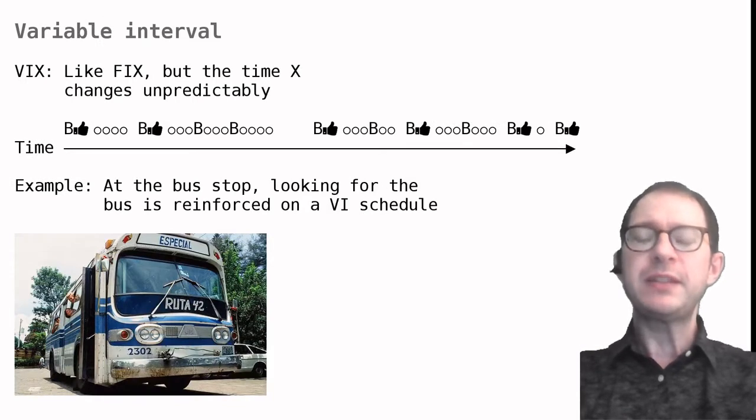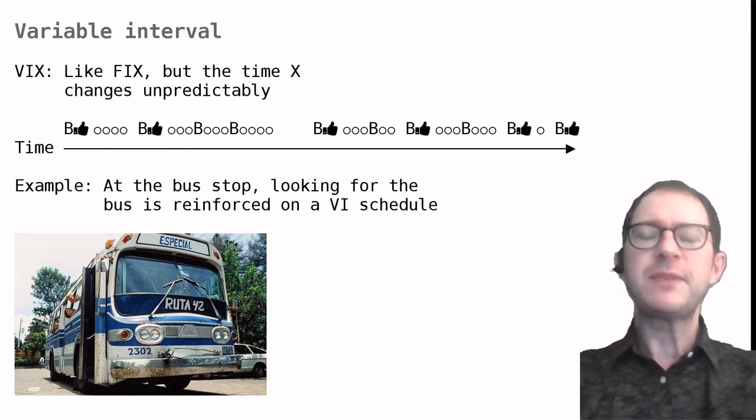A VI variable interval schedule is similar to an FI schedule, but the time to wait until the next reward becomes available is unpredictable. In our timeline, this is indicated by a variable amount of circles. This variability means that there is no way for the animal to be sure when a reward is available. In this schedule, many reinforcers are bound to produce no reward because they are performed when the reward is not available, during the timeout period.